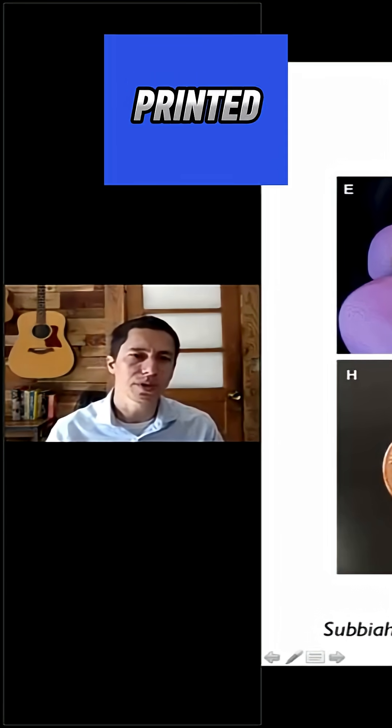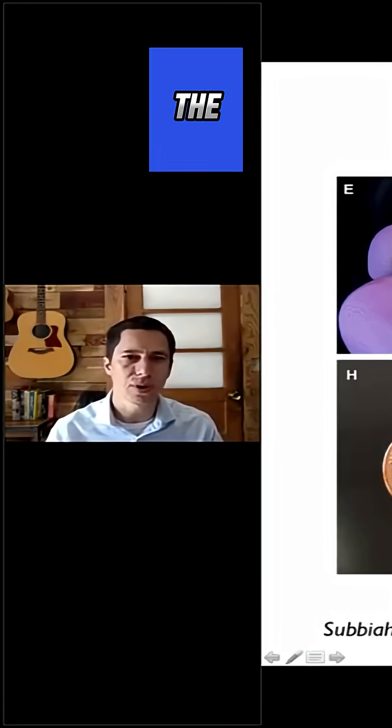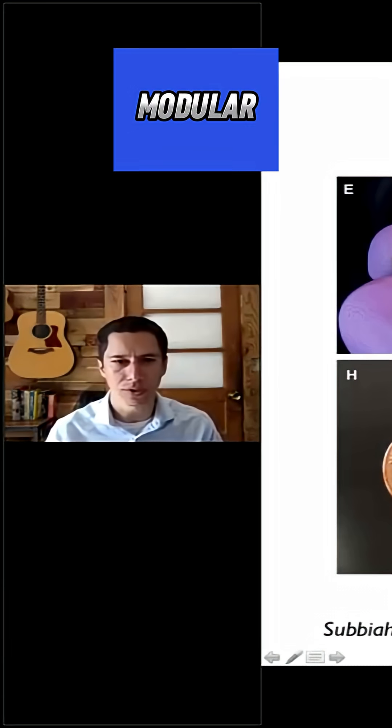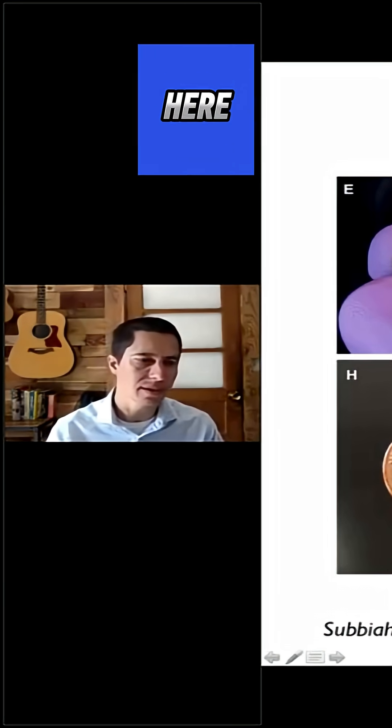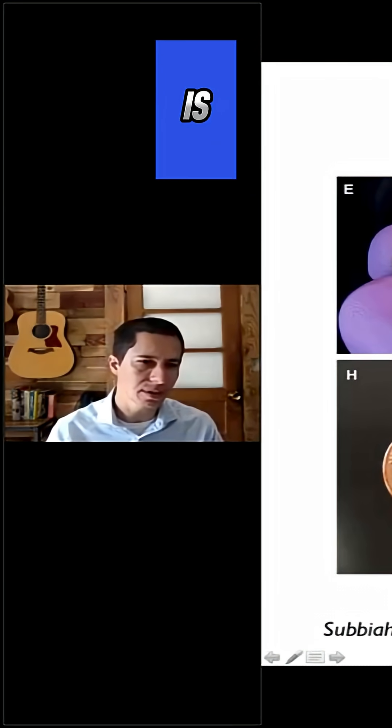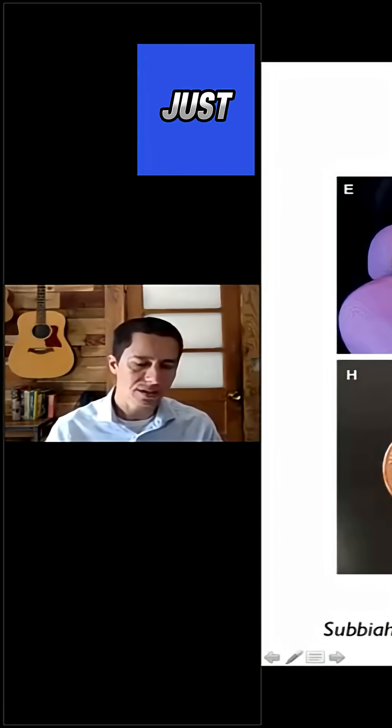So what we did here was we 3D printed these different microcages in the form of these LEGO-like modular scaffolds. The idea here was that we could print this material that is pretty rigid, but it could be stacked just like you would stack different LEGO parts.